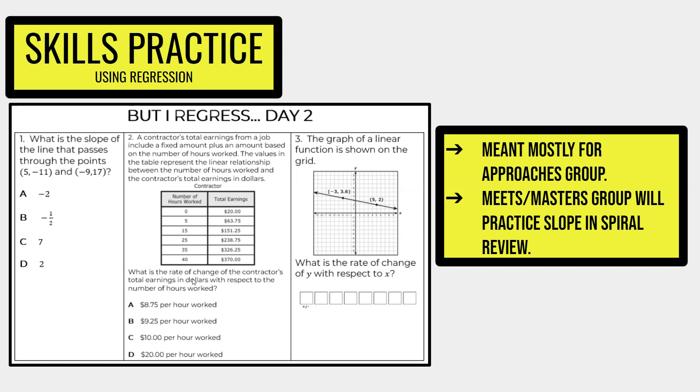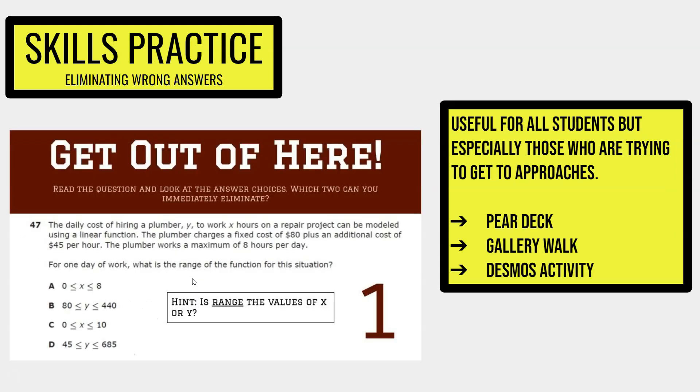Meets and master's group students will be practicing slope in their spiraling review as group B, so you don't have to focus on this as much for your higher-level students. We also have this activity where students will get practice eliminating wrong answers. This is useful for all students, but especially those who are trying to get to approaches.